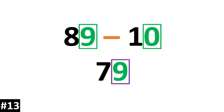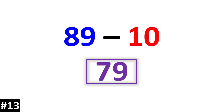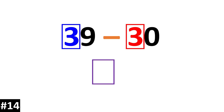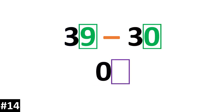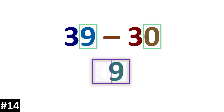39 minus 30. 3 10s minus 3 10s is 0 10s. We look to the ones: 9 minus 0 is 9. So our answer is 9.